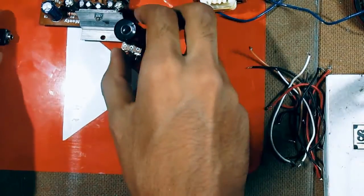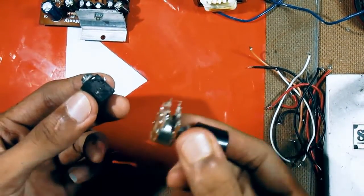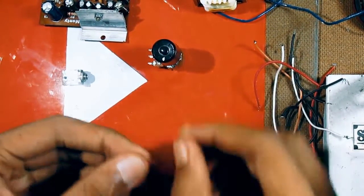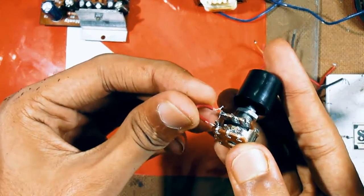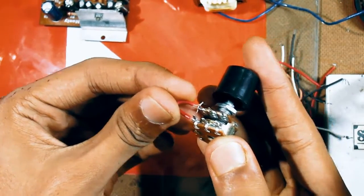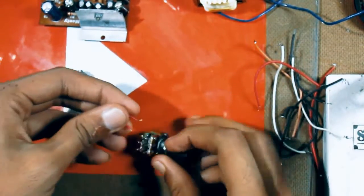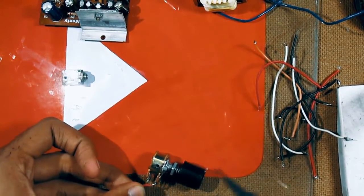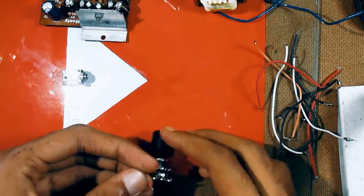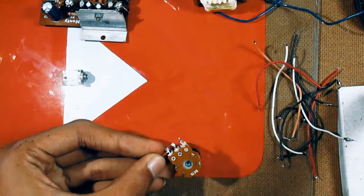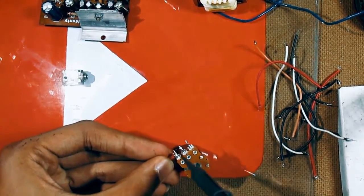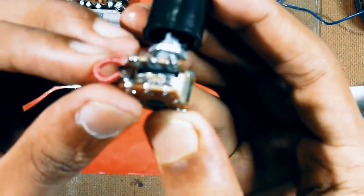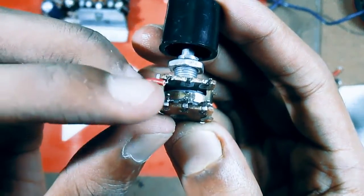Now, firstly, I will show you the connection between the stereo input jack and the volume control. Take a small piece of wire and connect any two of the extreme pins out of the volume control. As you can see, here it goes. These two pins are now connected together.